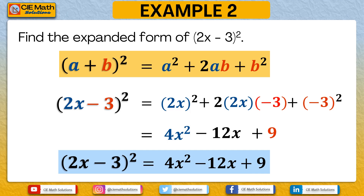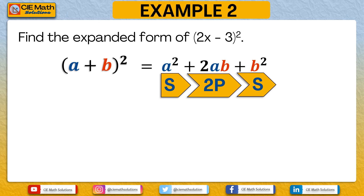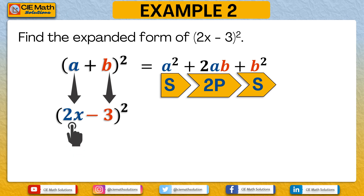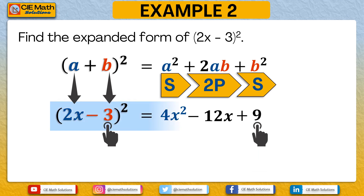Using the faster S-2P-S method, with a equal to 2x and b equal to negative 3: S is 2x squared, which gives 4x squared. 2P: 2x times negative 3 is negative 6x, times 2 gives negative 12x. And S: negative 3 raised to 2 gives 9. Therefore, 2x minus 3 squared equals 4x squared minus 12x plus 9.